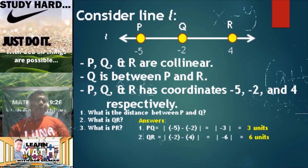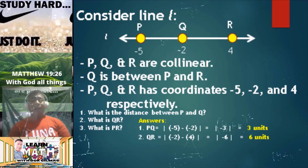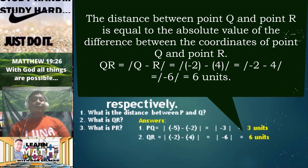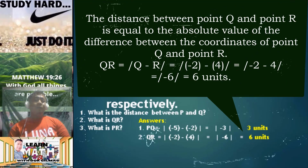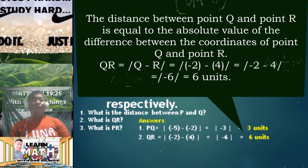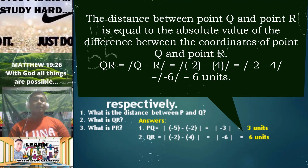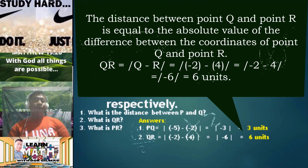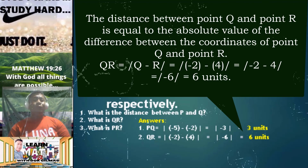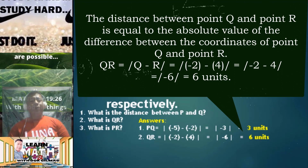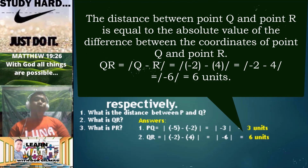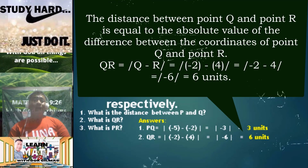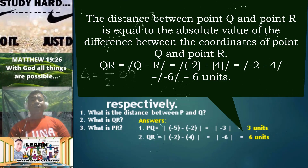Number 2: What is QR, or simply the length of QR? If we are to determine QR, we simply get the absolute value of the difference between point Q and point R. So, we have the absolute value of negative 2 minus 4, which is just equal to the absolute value of negative 6. Simplifying further, it is simply equal to 6 units.